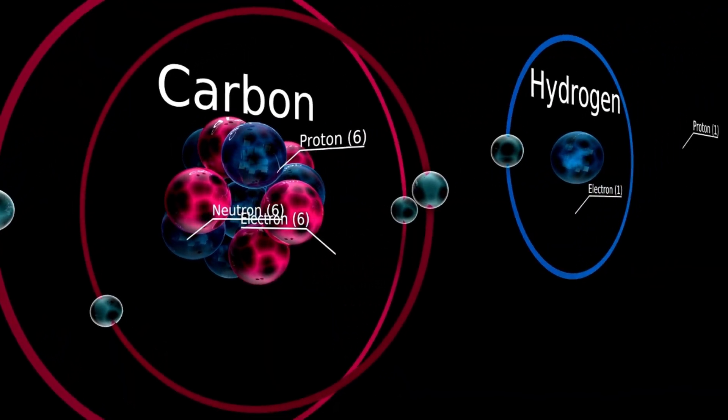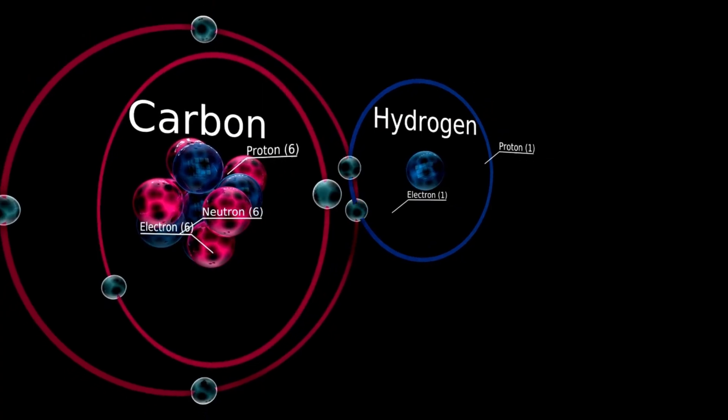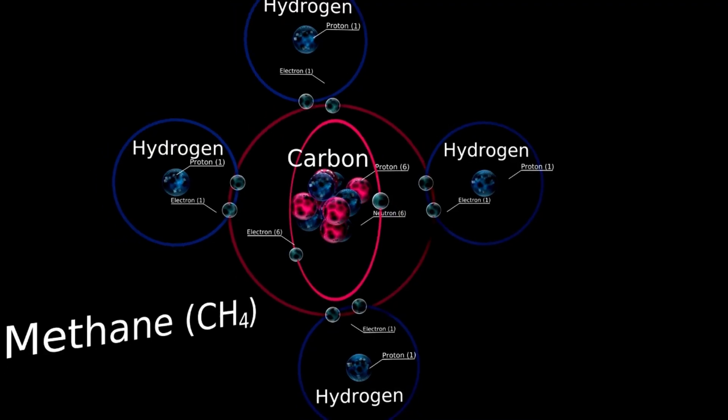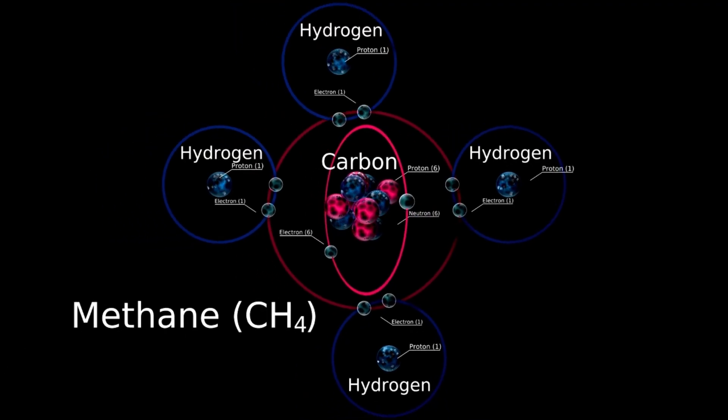One particularly puzzling discovery is the non-uniform distribution of these molecules in a galaxy known as SPT0418-47. The irregularity adds another layer of complexity, hinting at processes we do not yet fully understand.